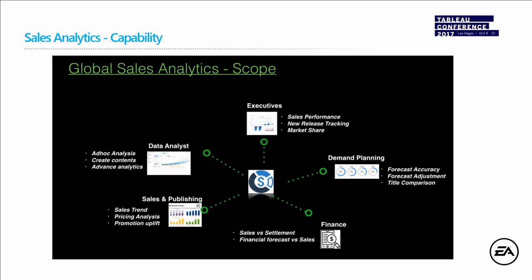The scope for global sales analytics included: executives looking for sales performance trends, new release tracking, and market share; data analysts needing ad hoc analysis capabilities and advanced visualization to create their own content; demand planners wanting to see forecast accuracy and adjust forecasts based on competitor titles; finance teams looking to budget on new game developments and review sales versus settlements; and publishing and sales teams looking at sales trends, pricing analysis, and promotion uplifts.